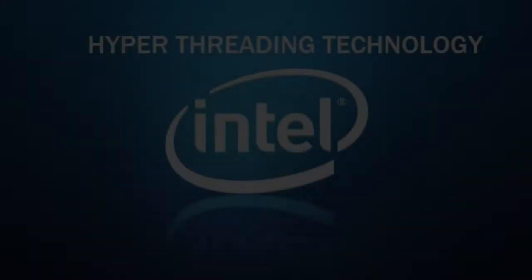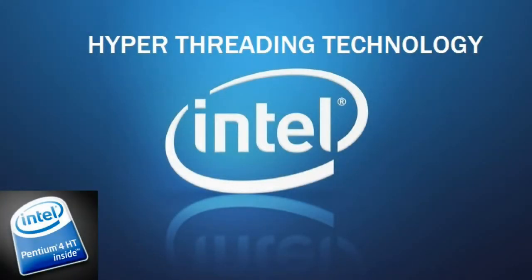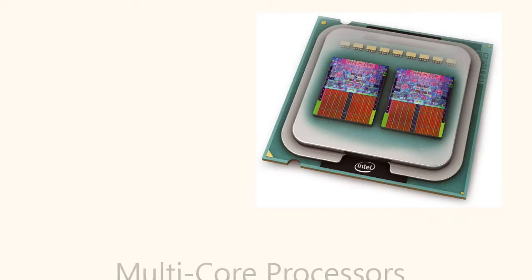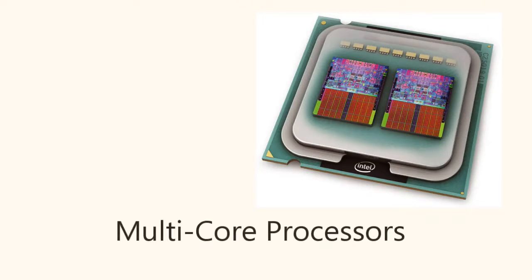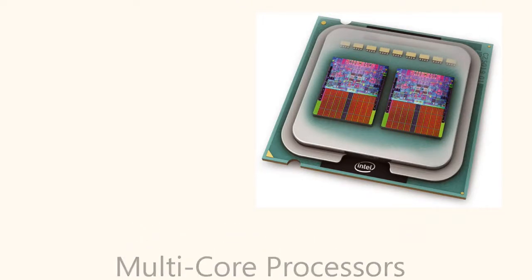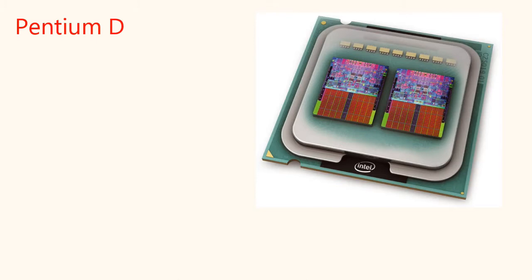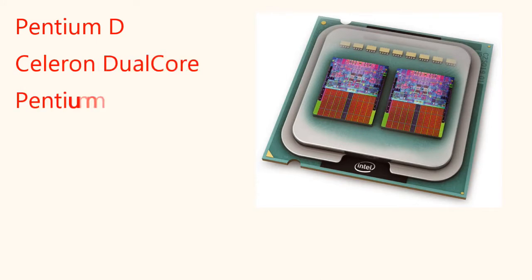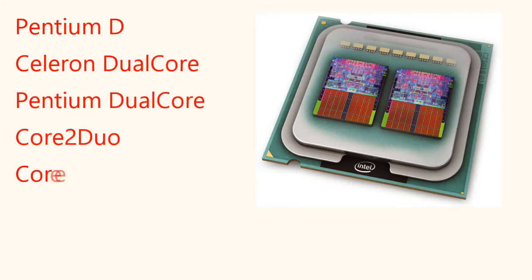Pentium 4 is a single-core processor, but with Hyper-Threading it appears as a dual-core processor to the operating system. The multi-core CPUs are Intel Pentium D, Pentium Dual Core, Celeron Dual Core, Core 2 Duo, Core i3, Core i5, Core i7.